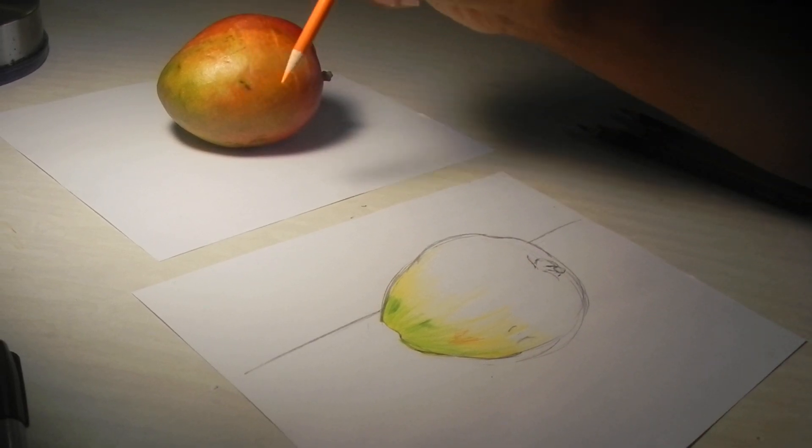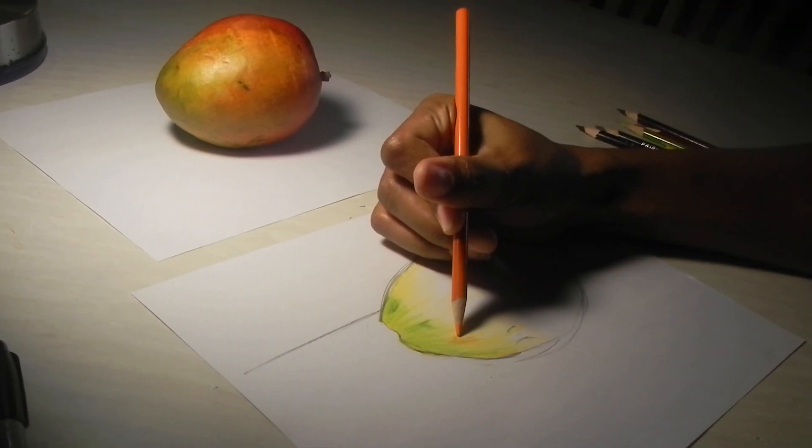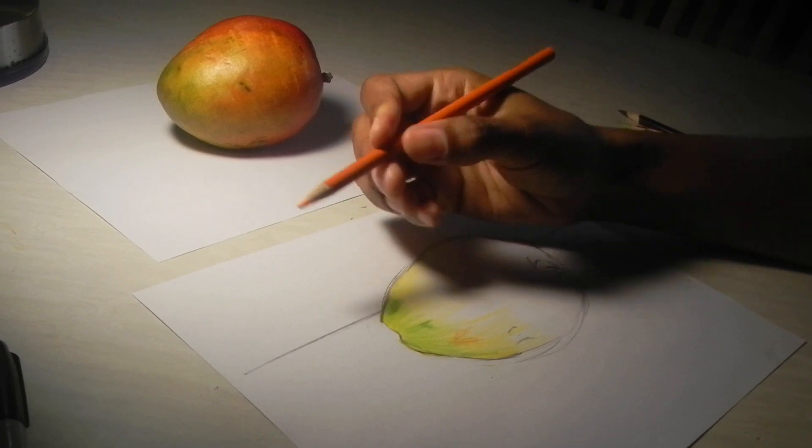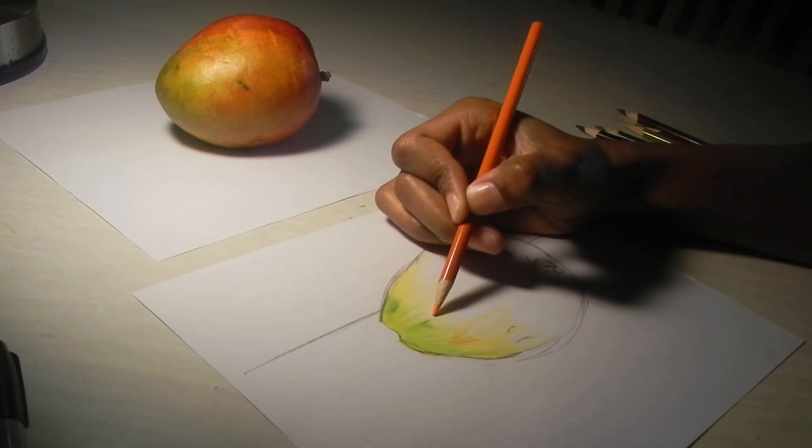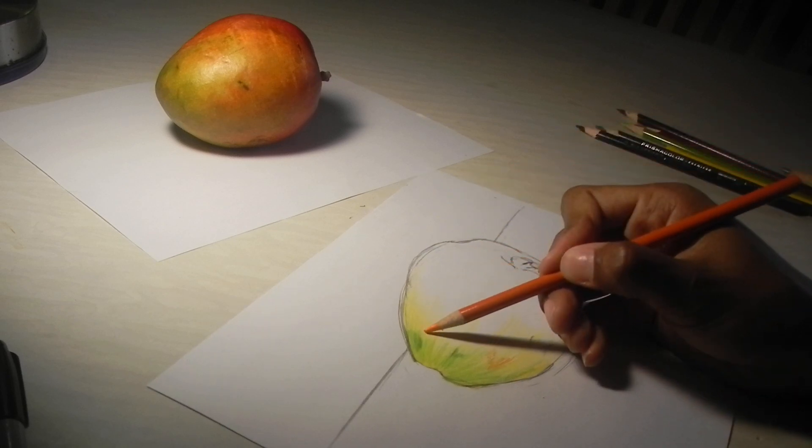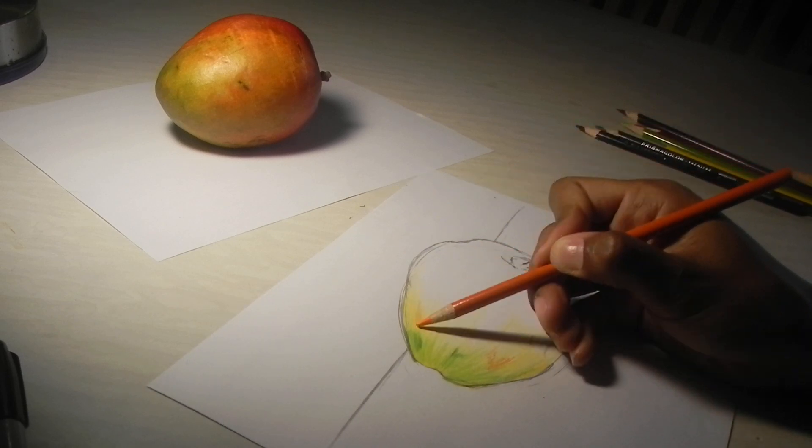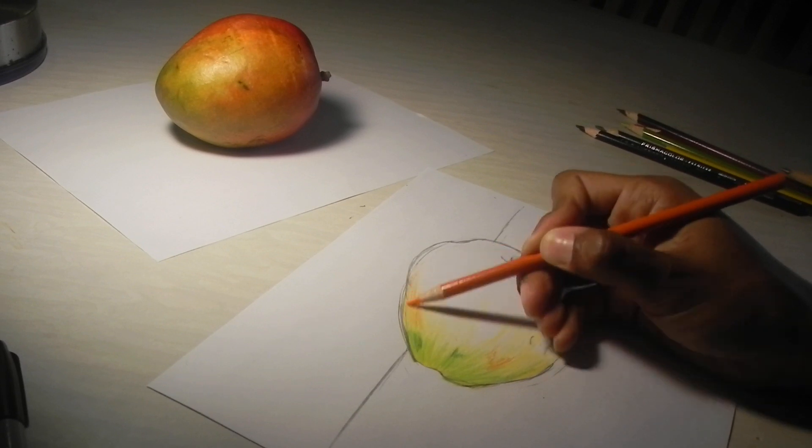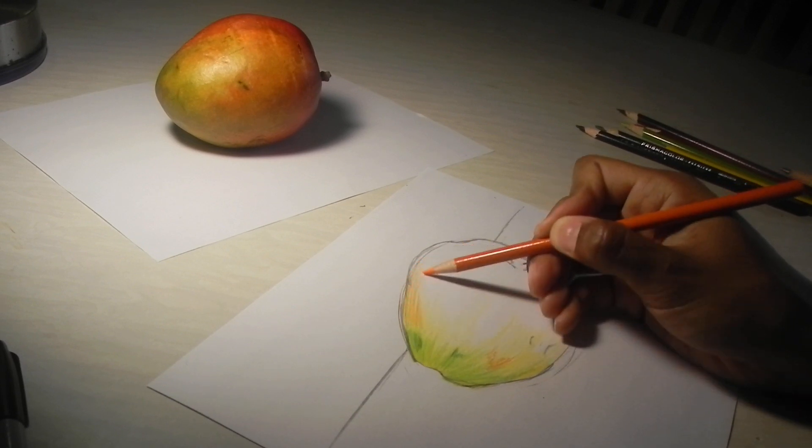Now I'm going to come in with some of my orange tones here. And you can see I started to do that already, but the shapes are sort of organic. And you just want to blend them all together.